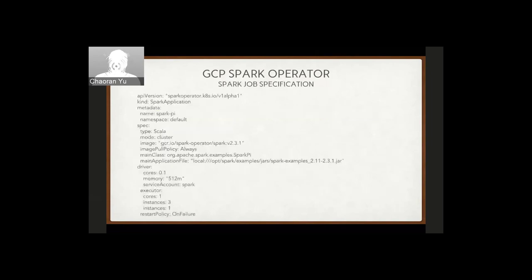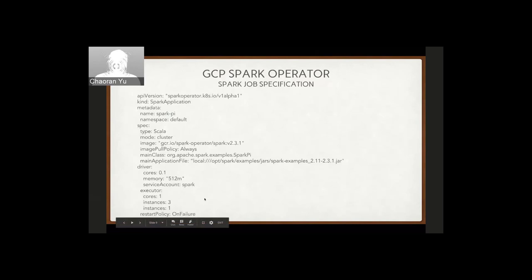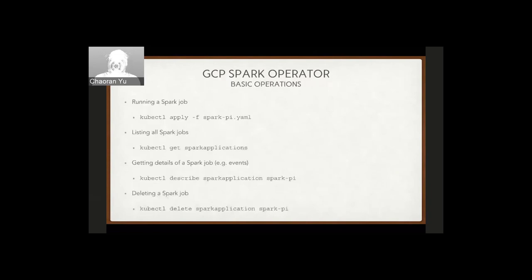Here's a sample YAML: you name your Spark job like 'spark-pi' and specify the namespace, your image, main class, and application file — all standard things. You configure the driver pod with memory resource requirements, a service account, and how many executor instances to launch along with their resource requirements. This is a simple YAML, but you can have all sorts of other configurations as long as spark-submit supports them.